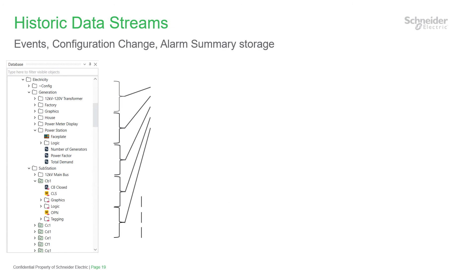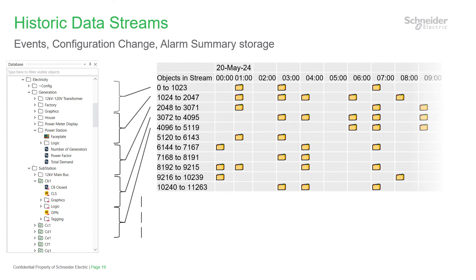Stream setup is important for all but the smallest GeoSCADA systems. Streams apply to the text-based historians such as the events and the alarm summary. The stream size for events gathers event entries for consecutive database items into hourly files. This diagram can help explain this, but do note that the ordering is not by database hierarchy — it's by database item ID. Streams are used to group and separate files in the historian so you don't get files which are too large or too many files, either of which could cause performance issues.